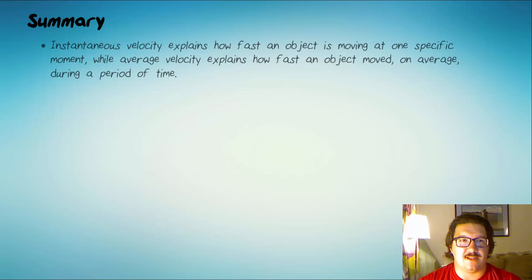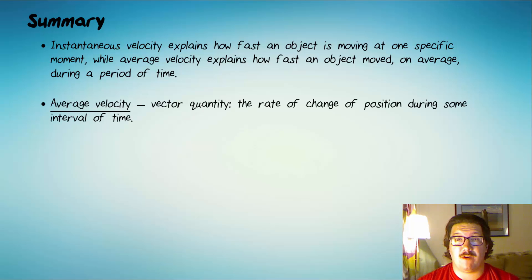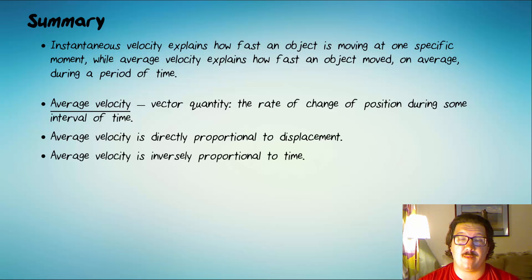Alright, let's summarize this lesson. Instantaneous velocity explains how fast an object is moving at one specific moment, while average velocity explains how fast an object moved on average during some period of time. Average velocity is the rate of change of position during some interval of time, and it is directly proportional to displacement and inversely proportional to time, and the equation for it is V-bar equals D over T.